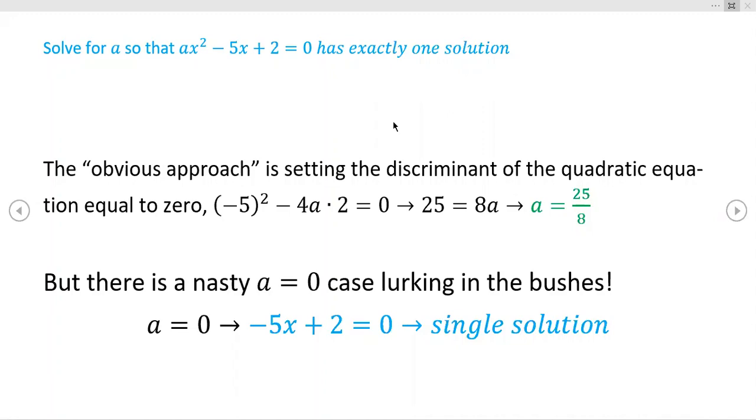That's not your garden variety problem. Normally you just solve for something, get numerical answers, but we're supposed to find the A such that there's exactly one solution to this equation.